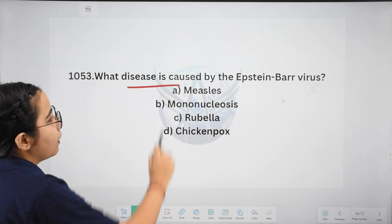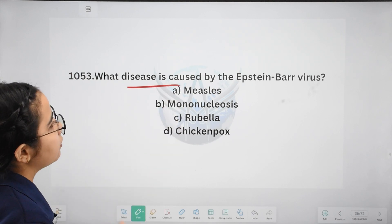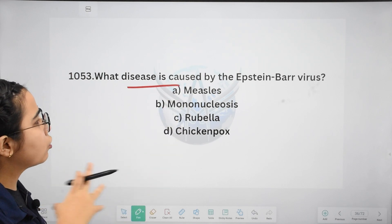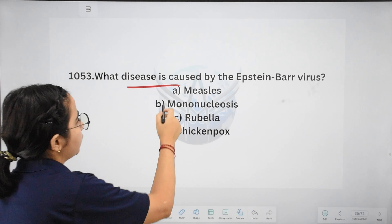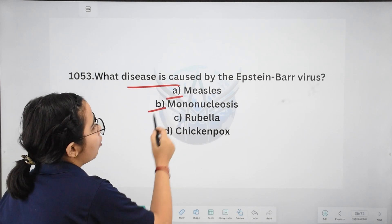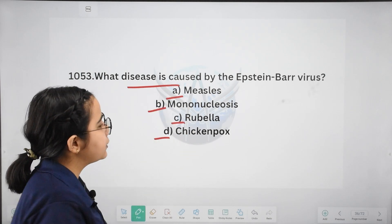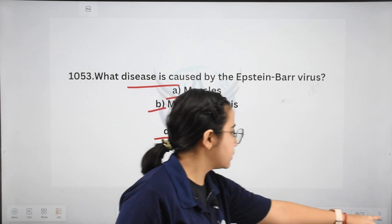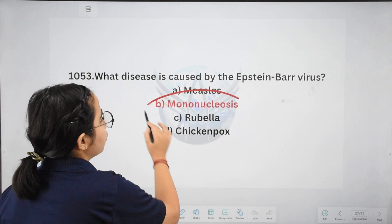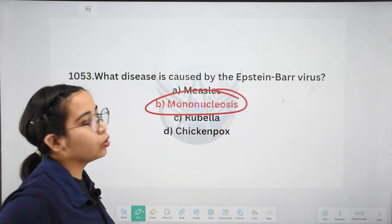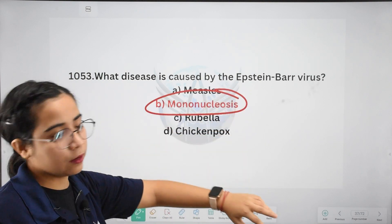Next: what disease is caused by Epstein-Barr virus? Options: measles, mononucleosis, rubella, or chicken pox. The answer is mononucleosis. Epstein-Barr virus causes mononucleosis.